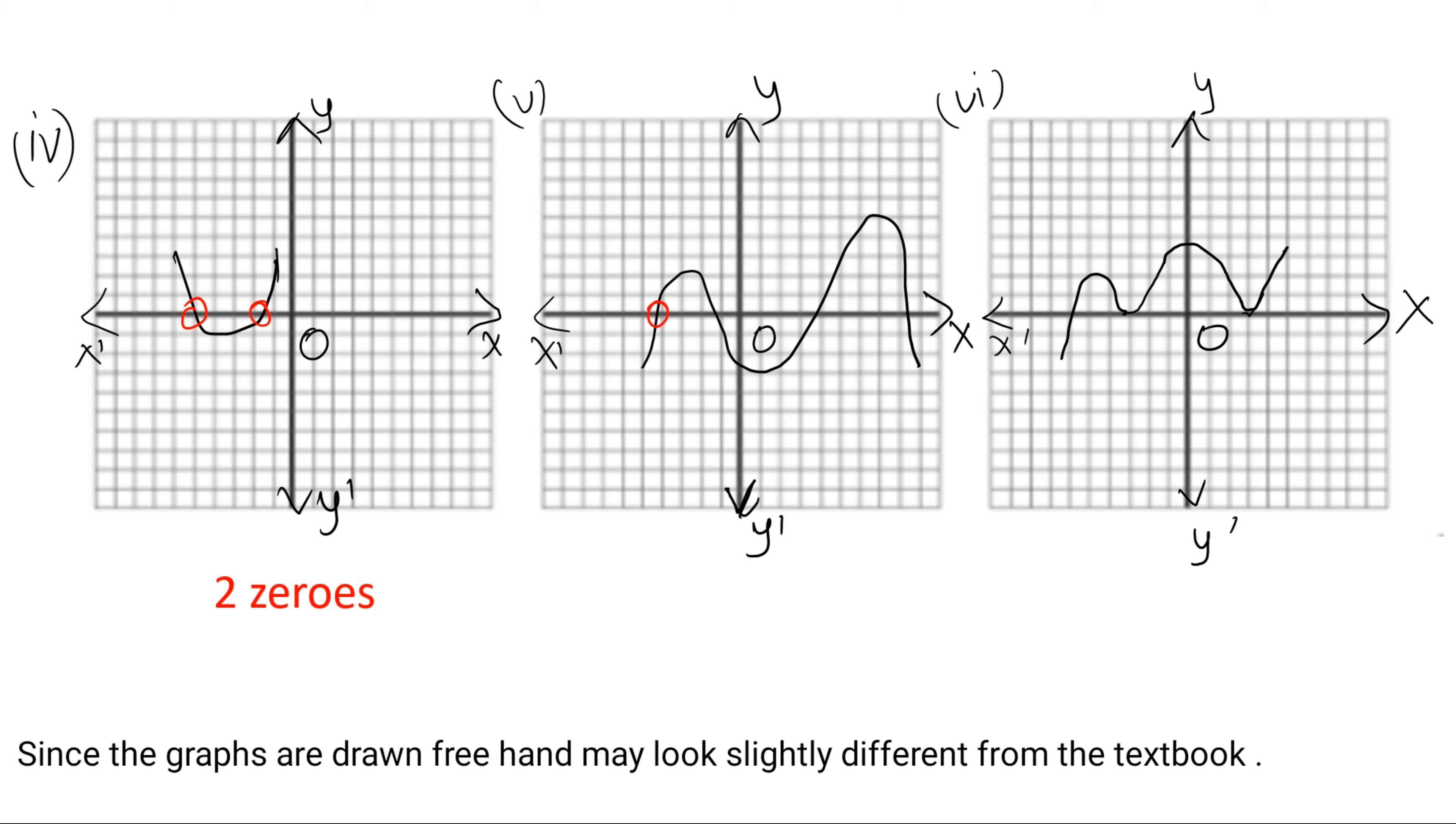Fifth one, one, two, three, and four. So four zeros.